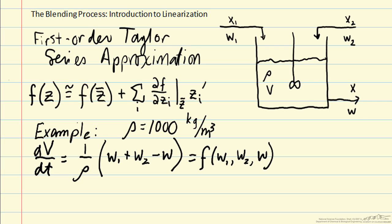Because we want to express deviations from our steady state, we're going to use deviation variables when we derive the linear approximate model. So we'll have V bar, our steady-state value, plus our deviation from that steady-state value. And because V bar is a constant, we can just write that as dV prime dt.